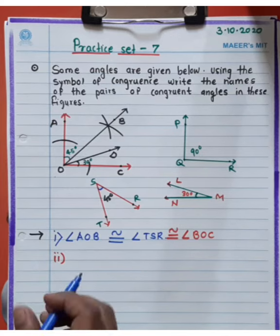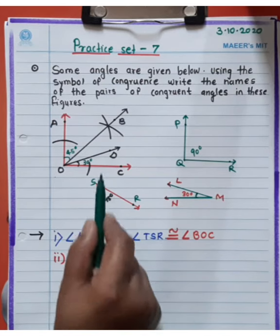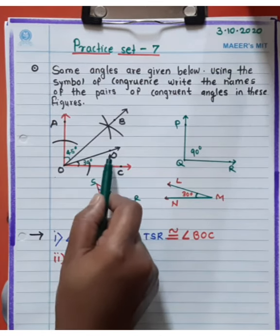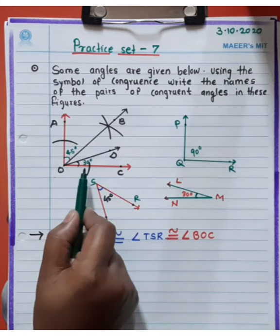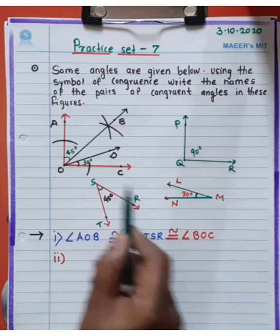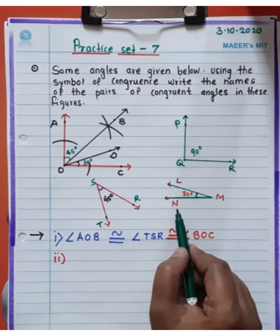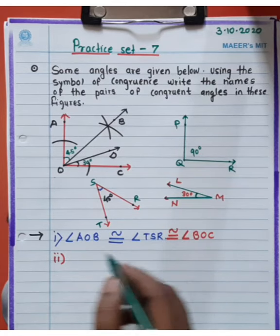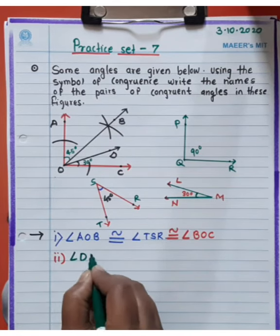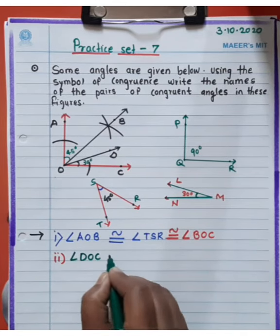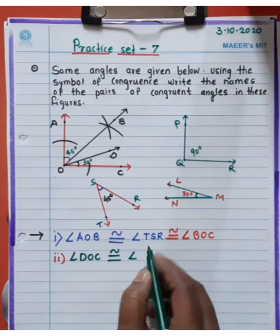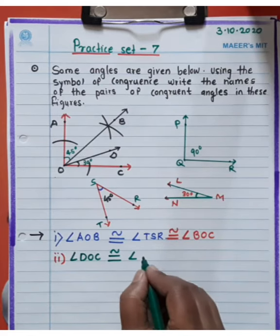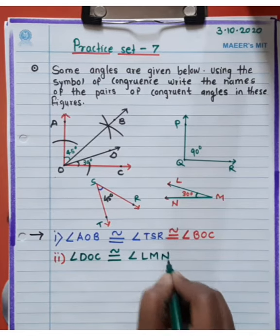Then the second pair — angle DOC is equal to 30 degrees and angle LMN is also equal to 30 degrees. So write down: angle DOC congruent angle LMN.